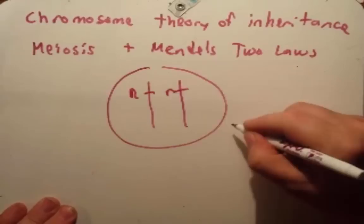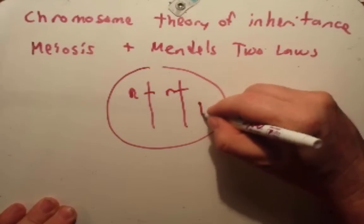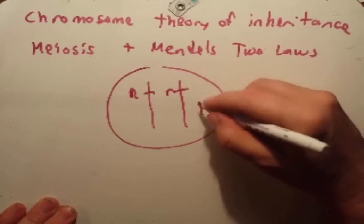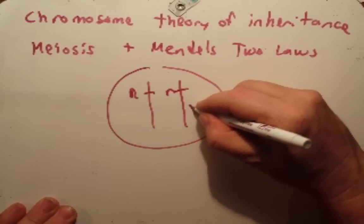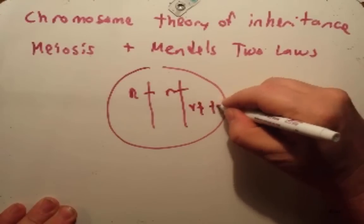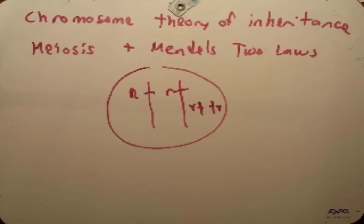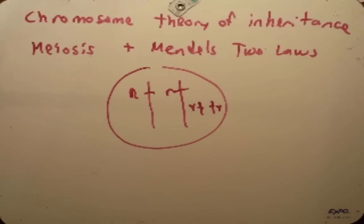So we have an R here on a chromosome, and then maybe we have another homologous pair that has the Y on it. So we can now explain these laws of segregation and independent assortment by thinking about meiosis, and that's what we want to do.